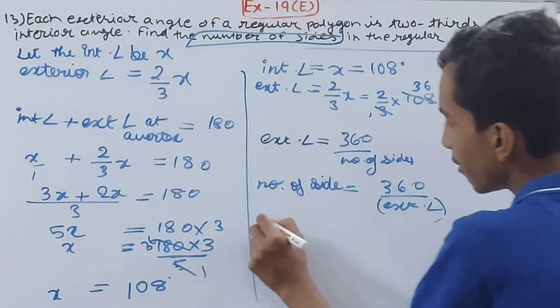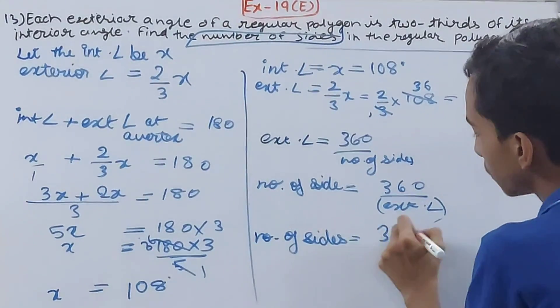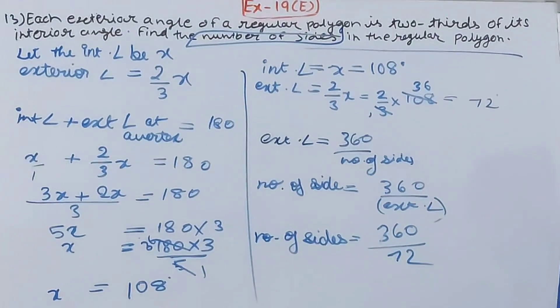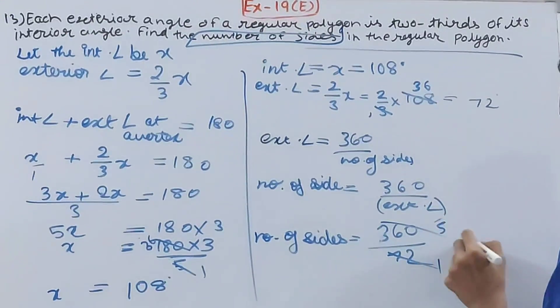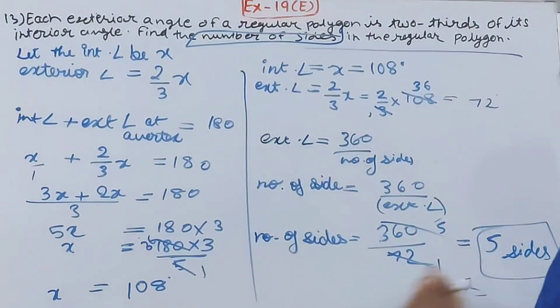Let's put the value and find the number of sides. Number of sides is equal to 360 upon the exterior angle, which is 72 degrees. This will cancel out, how many times? Five times. So the number of sides is equal to five sides.